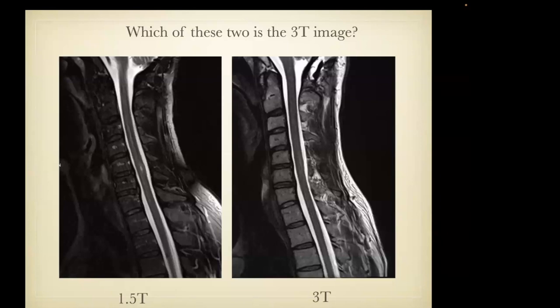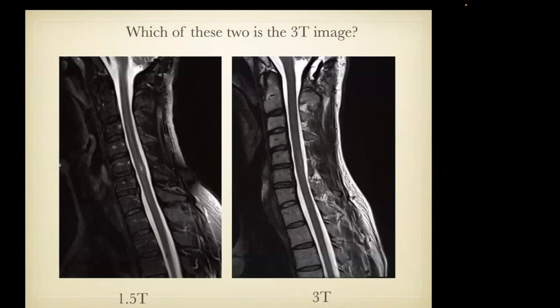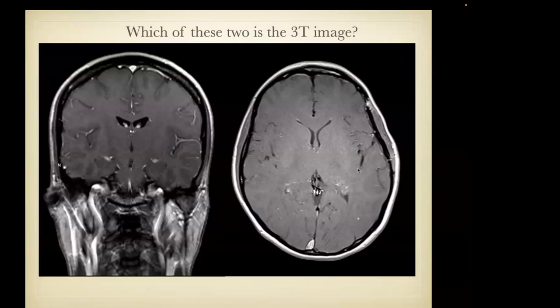We went to higher field strengths, but as a result we have more power deposition and lower tissue contrast. Look at these two post-contrast T1-weighted images — obviously in different planes. On the image on the left you can see the gray-white differentiation in the region of the insula. On the image on the right it has this gray look to it. This is the 3 Tesla image, and the 1.5 Tesla image is on your left.